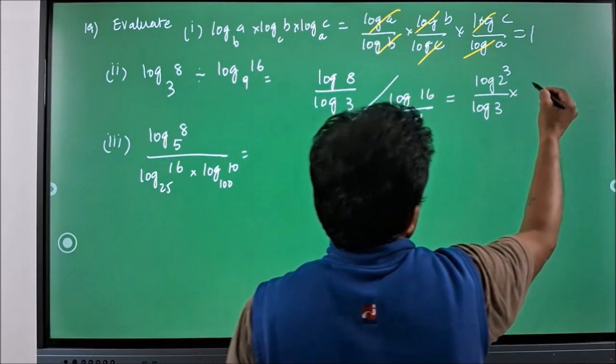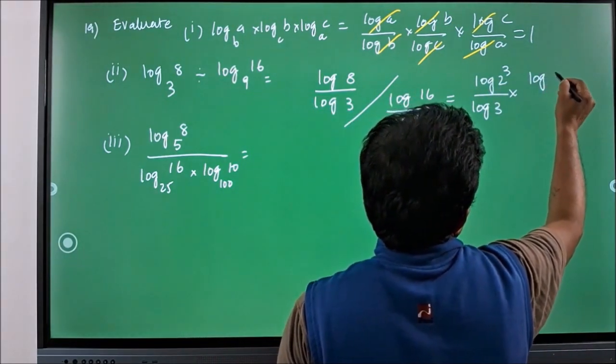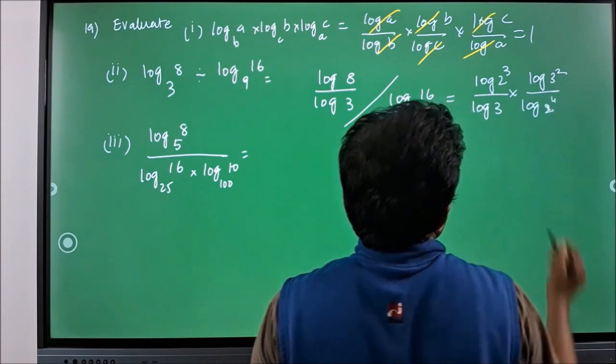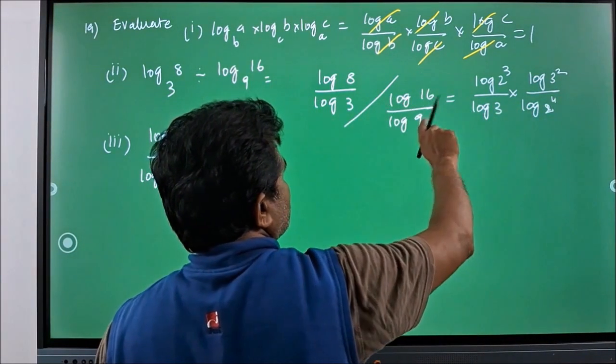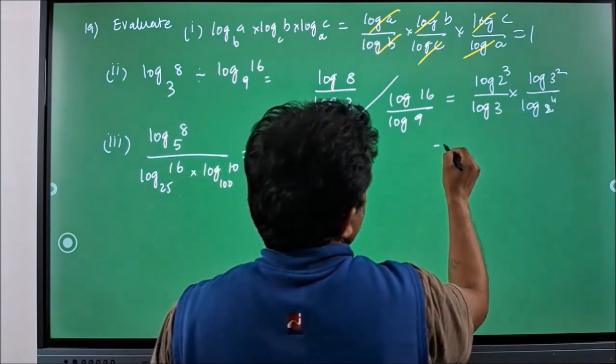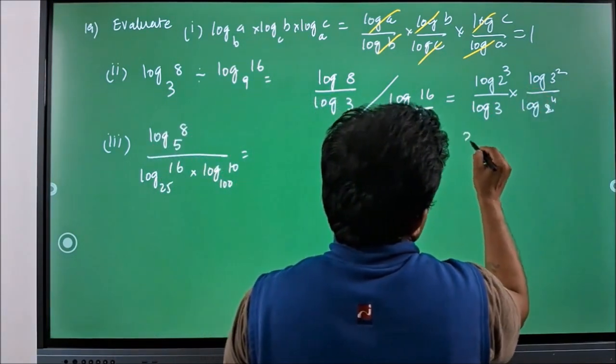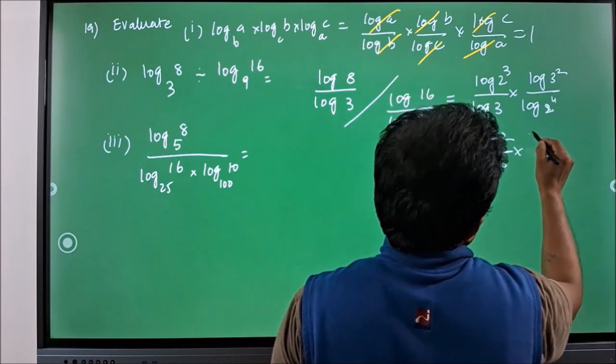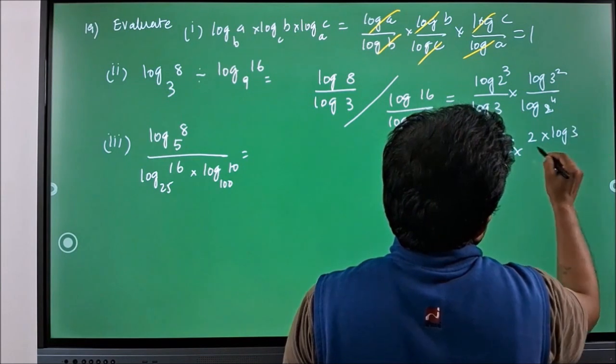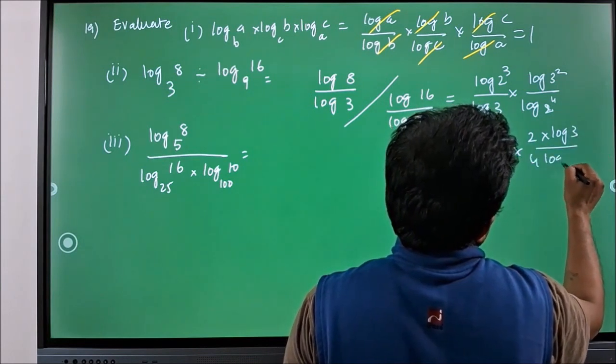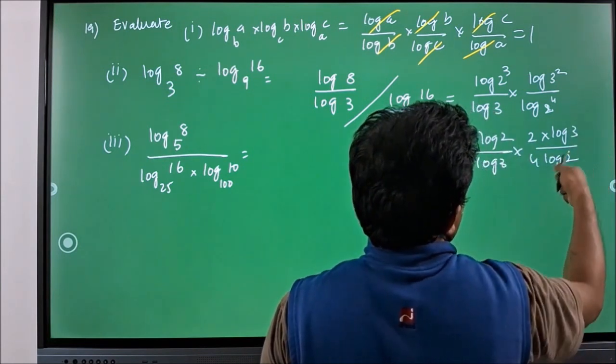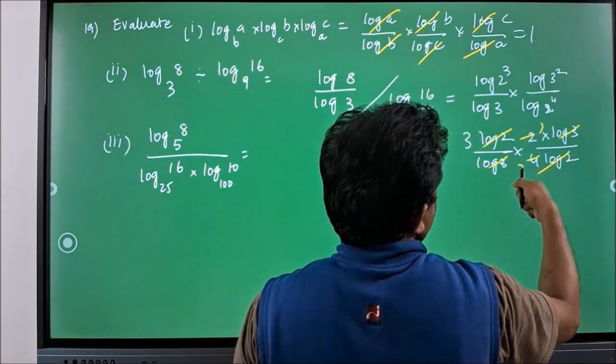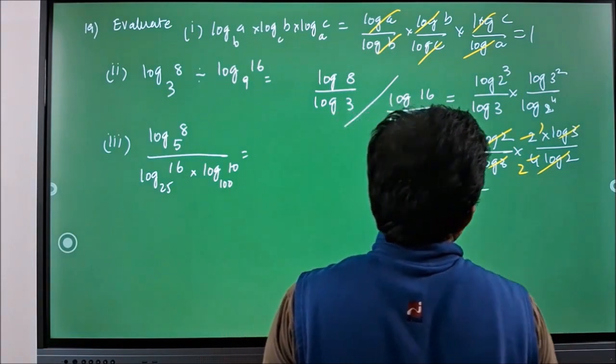This will be reciprocated and simplified like log 3 square by log 2 power 4, because 16 can be written as 2 power 4 and 9 can be written as 3 square. You will have 3 log 2 by log 3 into 2 log 3 divided by 4 log 2. Log 2 log 2 cancel, log 3 log 3 cancel. You will have 3 by 2 as answer.